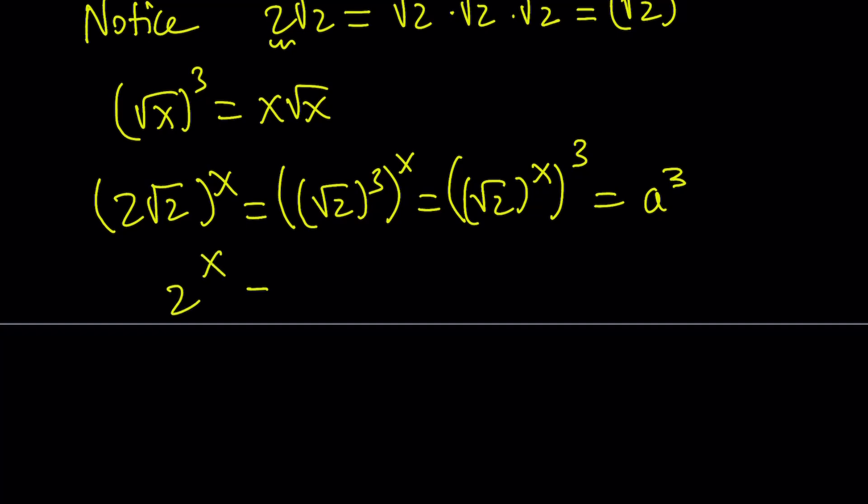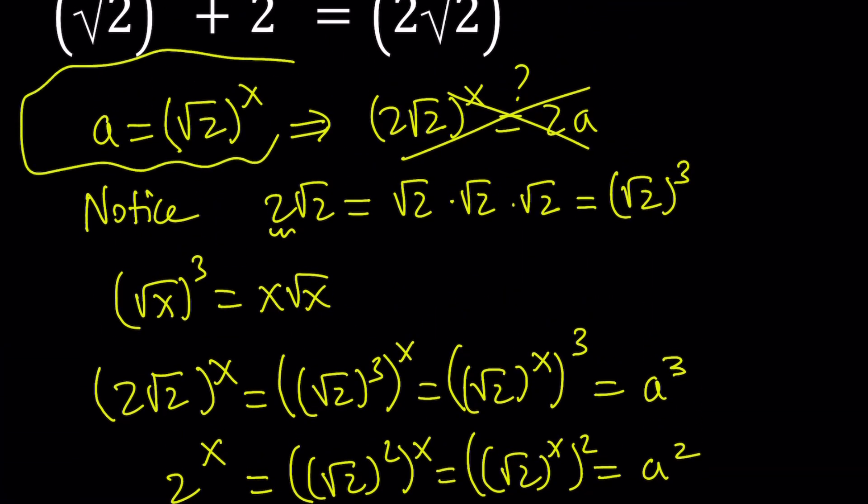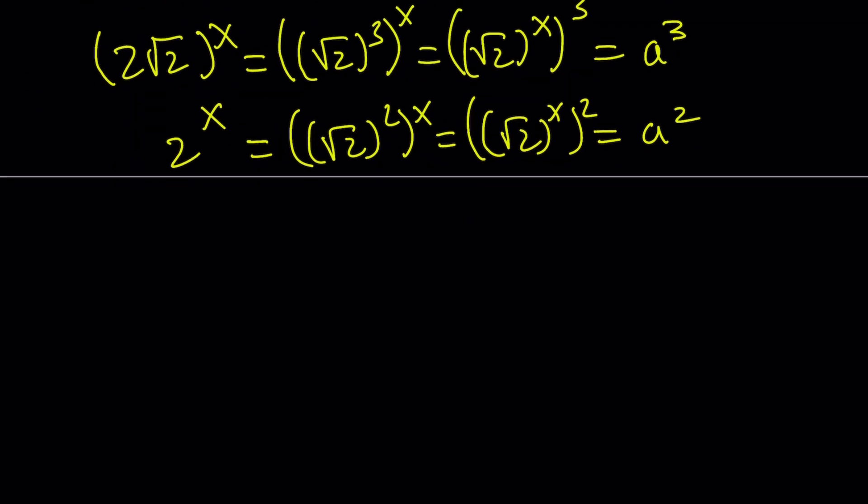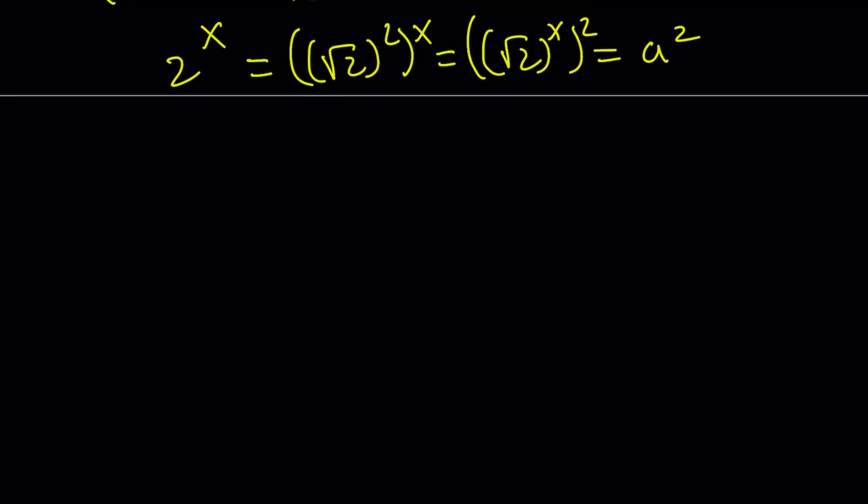And similarly, 2 to the power x can be written as square root of 2 squared to the power x. And that is the same thing as square root of 2 to the power x to the power 2. And that is a squared. So by making this substitution, which is a equals square root of 2 to the power x, we're able to simplify this and actually turn it into a polynomial equation, which is obviously a lot easier to solve.